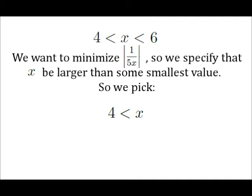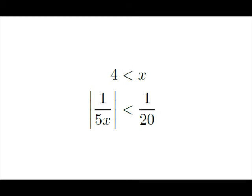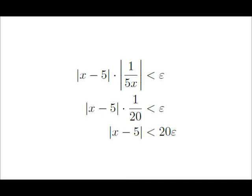When it comes to denominators, increasing the value makes the expression smaller. So if the range of values is 4 to 6 — to keep the absolute value of x minus 5 less than 1 — let's focus on x being greater than 4 to keep the absolute value of 1 over 5x less than some value. So if x is greater than 4, then the absolute value of 1 over 5x is less than 1 twentieth. With our initial condition that the absolute value of x minus 5 is less than 1, we can say that the absolute value of x minus 5 times 1 twentieth is less than epsilon, since the absolute value of 1 over 5x is less than 1 twentieth.